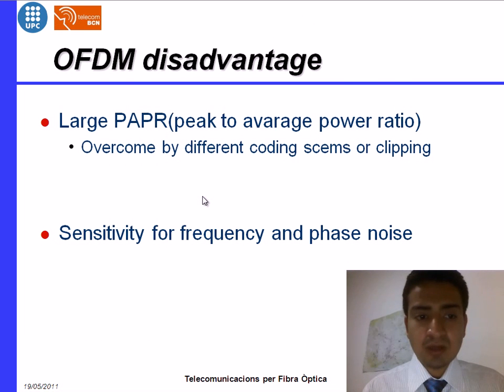So in order to compensate this, we can make the peak to be constant and we can increase the average so as to reduce this peak to average power ratio. There are a lot of coding schemes and amplifying schemes we are using.